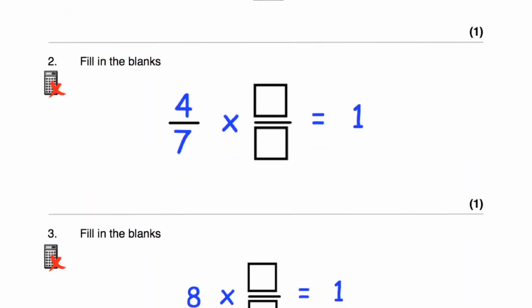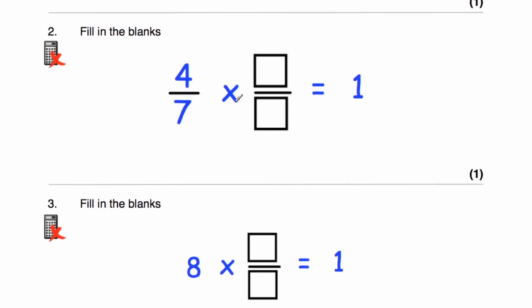Question 2 says fill in the blanks: 4 sevenths multiplied by something equals 1. That's going to be the reciprocal of 4 sevenths. Flipping it over, the reciprocal of 4 sevenths is 7 quarters.